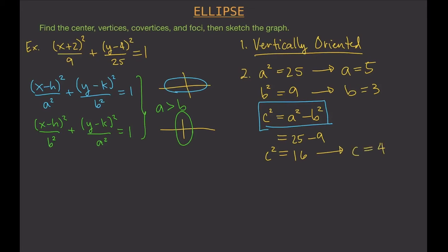We now have values for a, b, and c. a gives you the vertices of your ellipse, b gives you the co-vertices, and c gives you the foci. That is why these numbers are important.